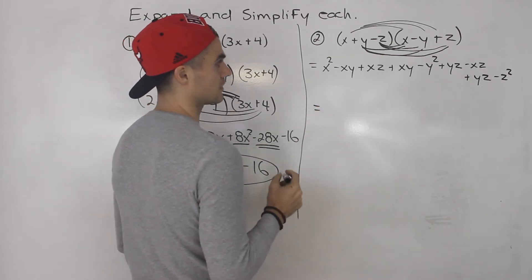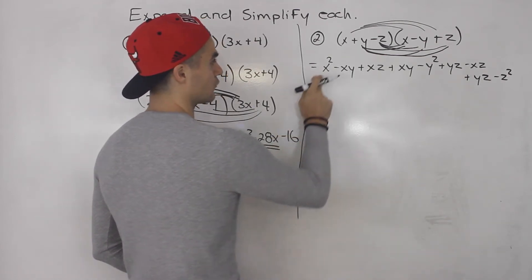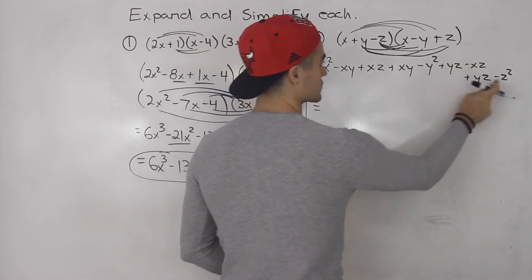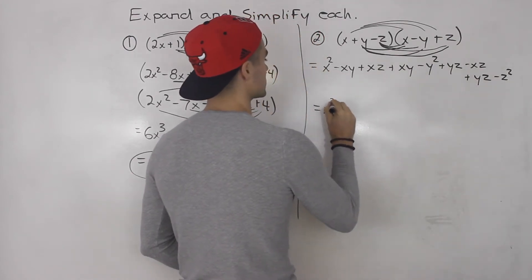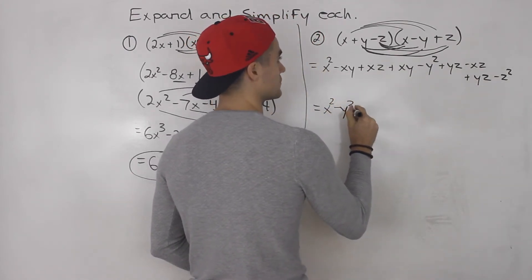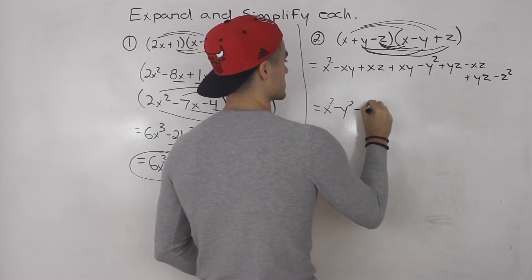Then from here, we just have to collect all the like terms. Well, first off, notice x squared minus y squared minus z squared. There's no like terms for any of those. So we could just write those in front.